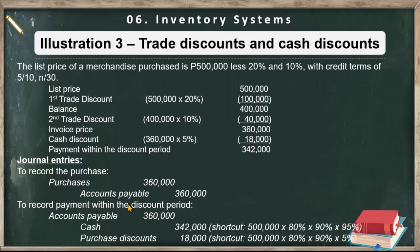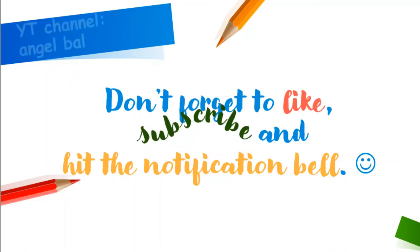We can also compute this using a shortcut: 500,000 times 80% (net of the 20% first trade discount) times 90% (net of the 10% second trade discount) equals 360,000 — the invoice price. To find the net amount after the 5% cash discount, multiply by 95% to get 342,000. For the purchase discount shortcut: 500,000 times 80% times 90% times 5% gives the discount amount. If you like this video, don't forget to click like, subscribe, and hit the notification bell to be updated with the latest video lessons. Thank you for watching.